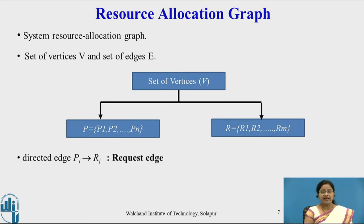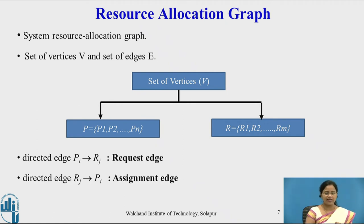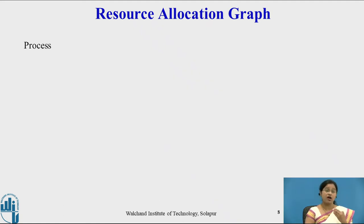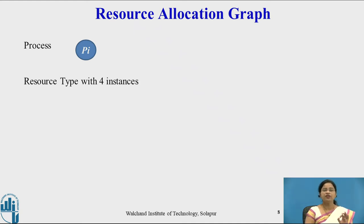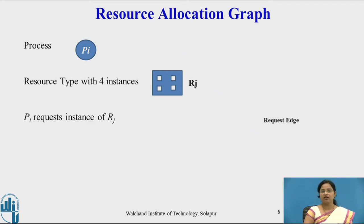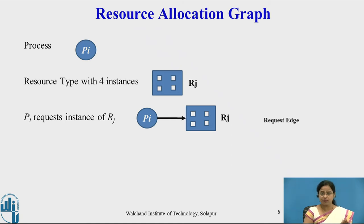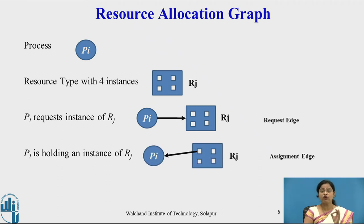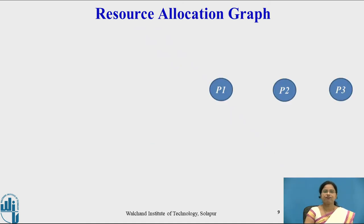A directed edge from a process to a resource is called a request edge, and a directed edge from a resource to a process is called an assignment edge. For notations: a process is denoted as a circle with its number; resources are indicated by a rectangular block with instances shown as dots or squares. When process Pi requests resource Rj, the request edge is shown. When an instance of the resource is allocated to the process, it is shown as an assignment edge.